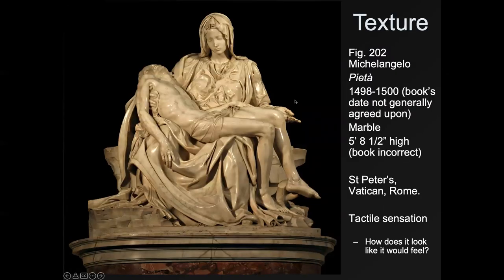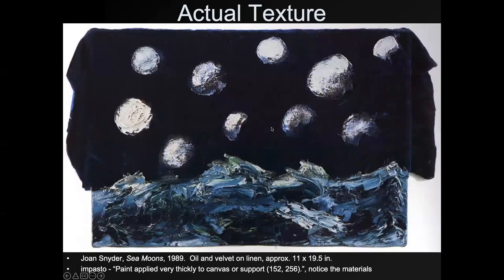So texture — this is Michelangelo's Pietà. Texture means when you look at something, what do you think it would feel like? When you look at his Pietà, which is highly polished marble, you would say that it's very, very smooth. So Joan Snyder in her Sea Moons has this heavy, heavy paint, and you can imagine it would have a texture almost like touching a rocky or sandy ground.